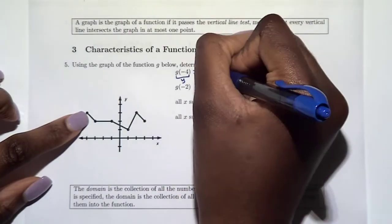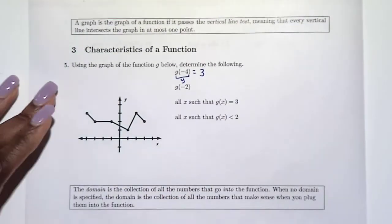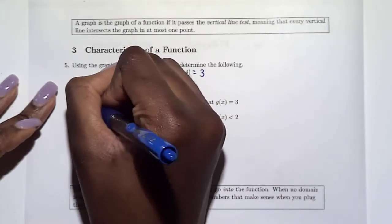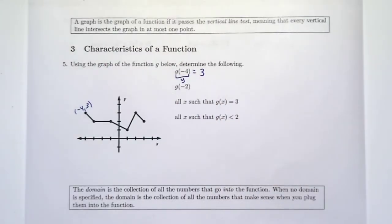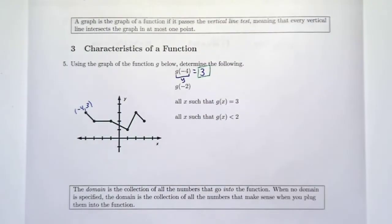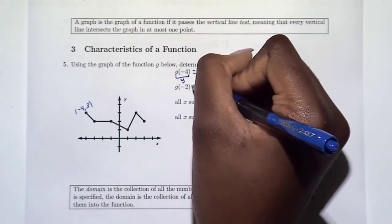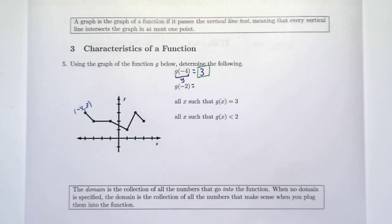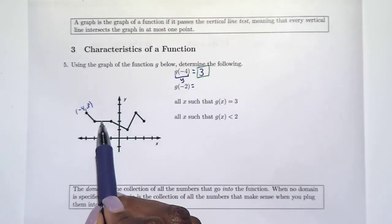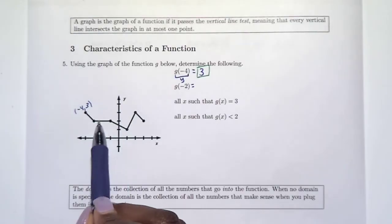So one, two, three — that's three. So this is the point negative four, three: x is negative four, y is three. Now let's do the same thing and determine g of negative two, which again is a y-value — negative two is the x-value. Looking at the graph, that is at positive two.